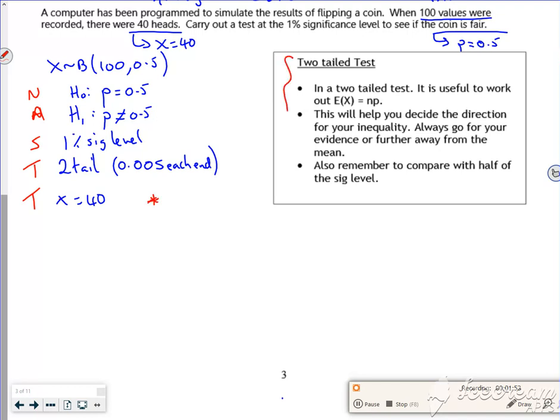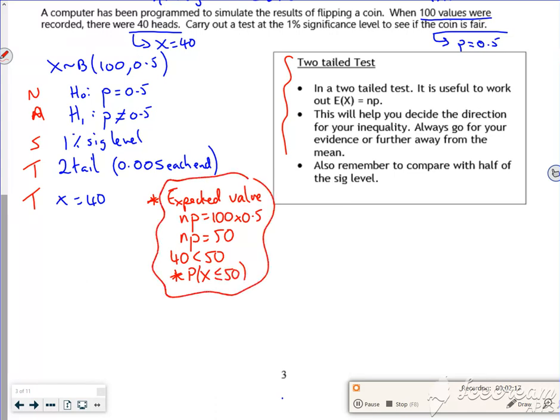Now, let's talk about it here. I look at the expected value, which is N times P. So that's 100 times 0.5. So I would expect to get 50. Now, because 40 is less than 50, I do the probability that it's less than or equal to.